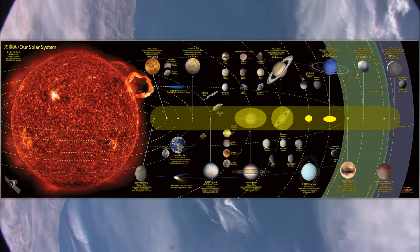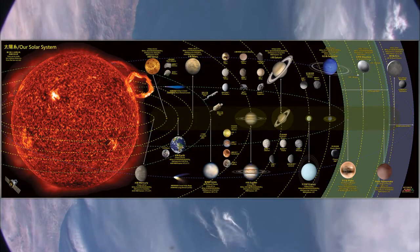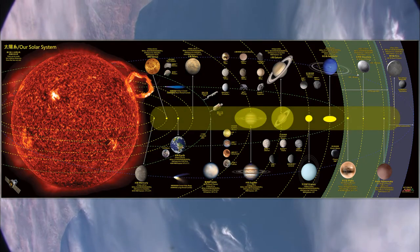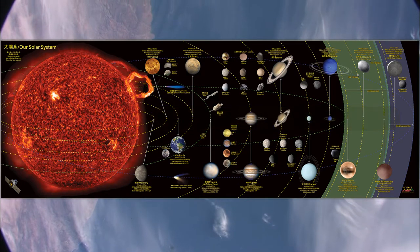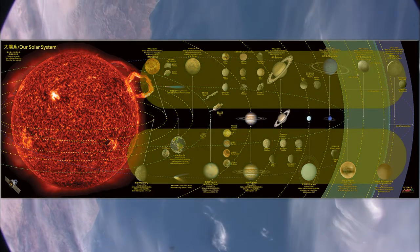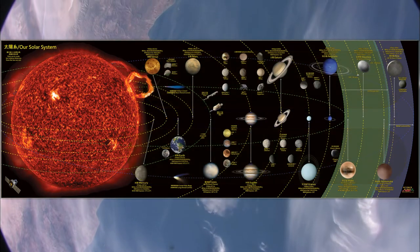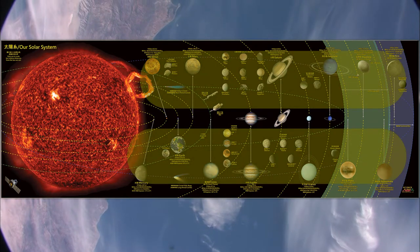On our poster, the center row of images are all scaled correctly to the sun. So you can see how big the Earth is as compared to the sun, for example. Above and below these images, we have larger images of all the planets and all of their major moons.